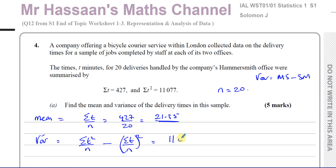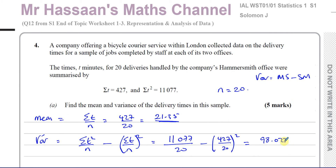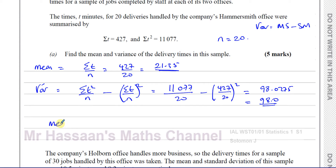So this is going to be 11,077 divided by 20, minus our last answer — which I'll write in its fractional form to make it more accurate — squared. So the variance is 11,077 divided by 20 minus (427/20) squared. That gives us the variance, which is 98.0275. Rounding to 3 significant figures: 98.0. So the mean is 21.35 and the variance is 98.0. That's the answer to part A.